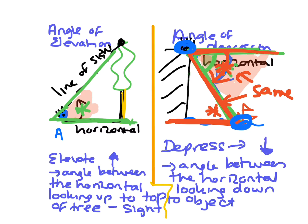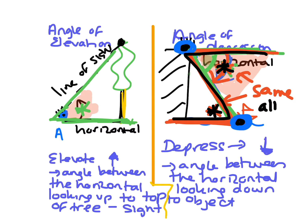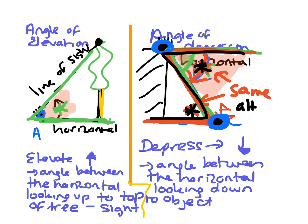So if you were looking from here and looking at each other, the angle of depression will equal the angle of elevation looking back up. That's because it forms a Z, and the term for this is alternate angles. Alternate angles are equal, and that's just following that rule.